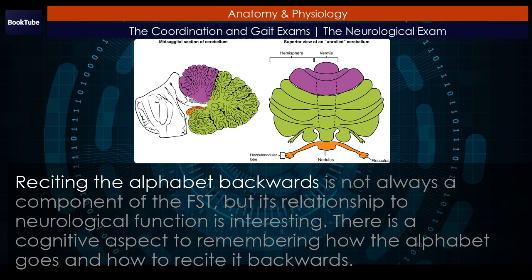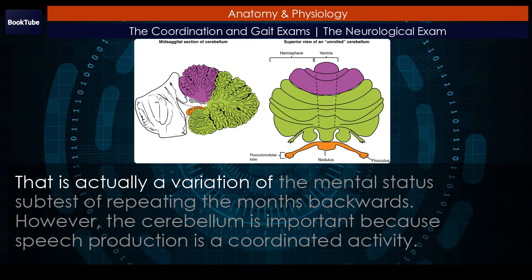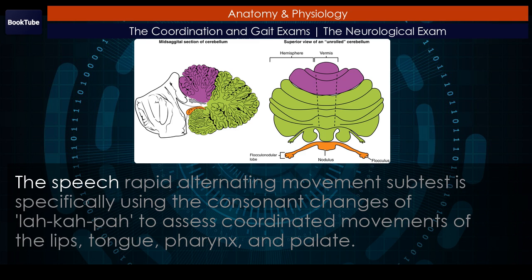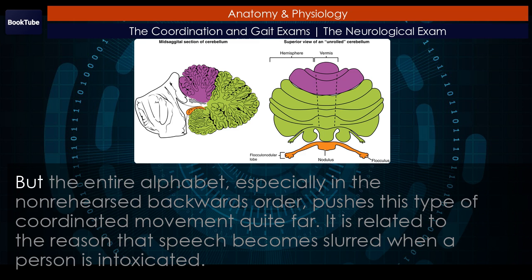Reciting the alphabet backwards is not always a component of the FST, but its relationship to neurological function is interesting. There is a cognitive aspect to remembering how the alphabet goes and how to recite it backwards, which is actually a variation of the mental status subtest of repeating the months backwards. However, the cerebellum is important because speech production is a coordinated activity. The speech rapid alternating movement subtest specifically uses the consonant changes of 'la ca pa' to assess coordinated movements of the lips, tongue, pharynx, and palate. But the entire alphabet, especially in the non-rehearsed backwards order, pushes this type of coordinated movement quite far.